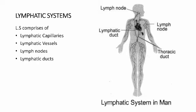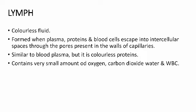What is lymph? Lymph is a colorless fluid that flows through the lymphatic system. It is formed when plasma, proteins and blood cells escape from cells into intercellular spaces in the tissues through pores in the walls of capillaries. Lymph is similar to blood plasma but is colorless and contains fewer proteins, and also contains very small amounts of oxygen, carbon dioxide, water and white blood cells.